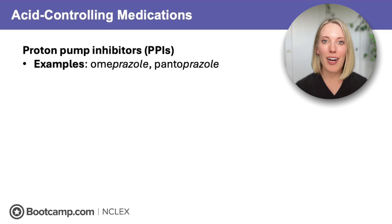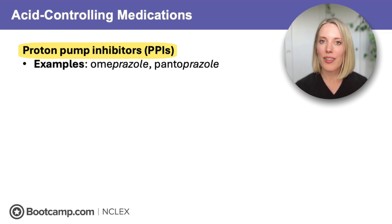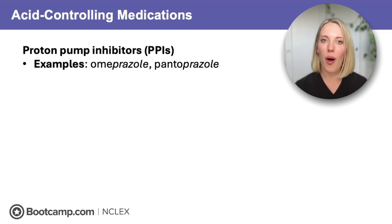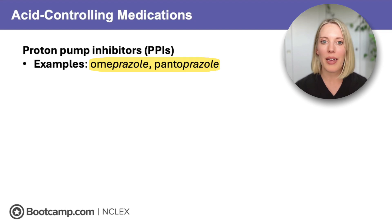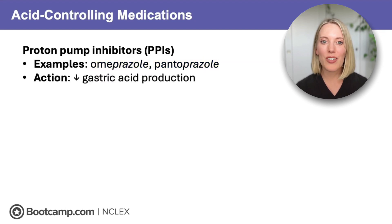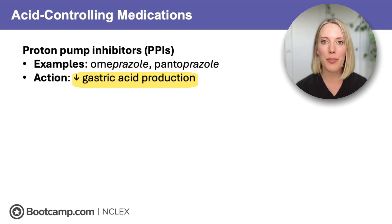First up are proton pump inhibitors, or PPIs. We just need to remember our P's — think protons, pumps, and prazoles — because all of these medications end in 'prazole': omeprazole, pantoprazole, and lansoprazole. These medications work by decreasing acid production by blocking the proton pumps, or acid pumps, in the stomach lining.